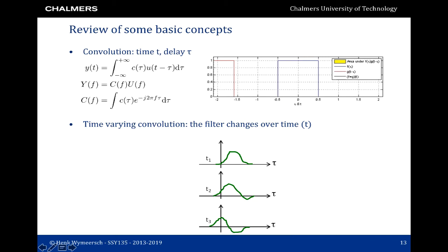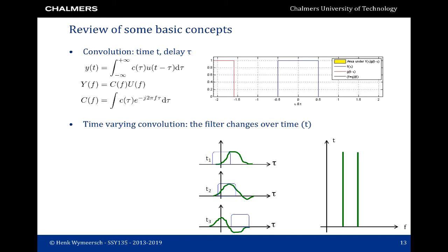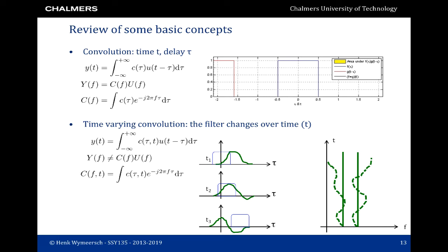When the channel is time-varying, things become more difficult. We have a channel c at different time instances t_1, t_2, t_3, and the channel does not remain the same for all times — so we have a channel c that depends on both t and tau. When an input signal goes through this, at different times it sees different channels. Mathematically, the channel becomes c(tau, t) with both a delay and a time component. We can no longer use the simple Fourier relationship, but we can define a time-varying Fourier transform C(f, t), which is the Fourier transform of c(tau, t) with respect to tau.